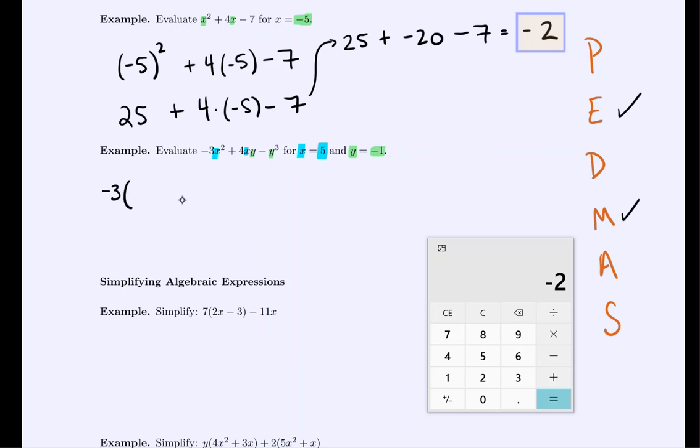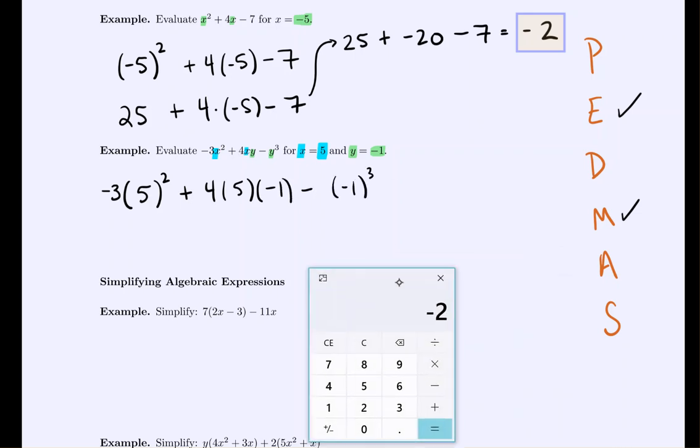That would give us negative 3 times, x was being squared so that's 5 squared, plus 4 times x takes on the value 5, y takes on the value negative 1 minus negative 1 cubed. And then we use order of operations to simplify.